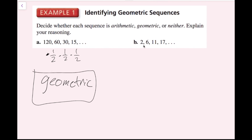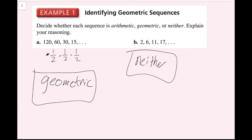If I look over in part B, I'm going from 2 to 6 to 11 to 17. I'm not adding the same thing each time — here I'm adding 4, then 5, then 6. And I'm not multiplying the same thing each time either. I'm multiplying by 3 to get to 6, but then if I multiply by 3 again, I don't get 11, I would get 18. So this is going to be a neither case — neither arithmetic nor geometric. And now we're done with example 1.